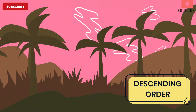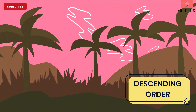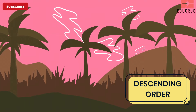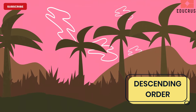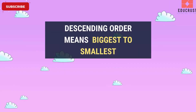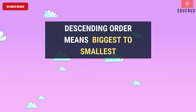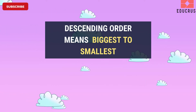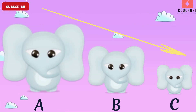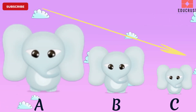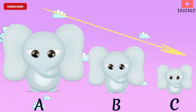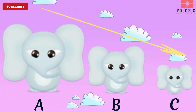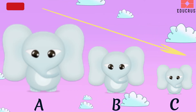Hello kids, today we'll learn about what is descending order. Come, let's start. Descending order means biggest to smallest. Look at these elephants — they are in descending order, meaning from biggest to smallest.